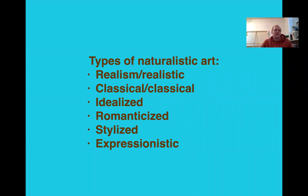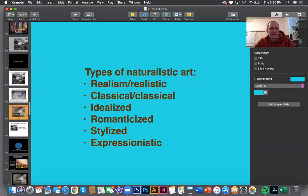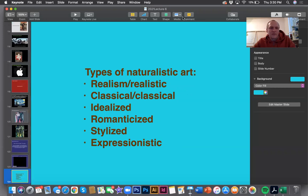So here we are at the end. We've got the types of naturalistic art: realism or realistic, classical or little classical, idealized, romanticized, stylized, and expressionistic. These you should know very well and be able to apply them to pictures that you see. I will see you next time and we will talk about abstraction.